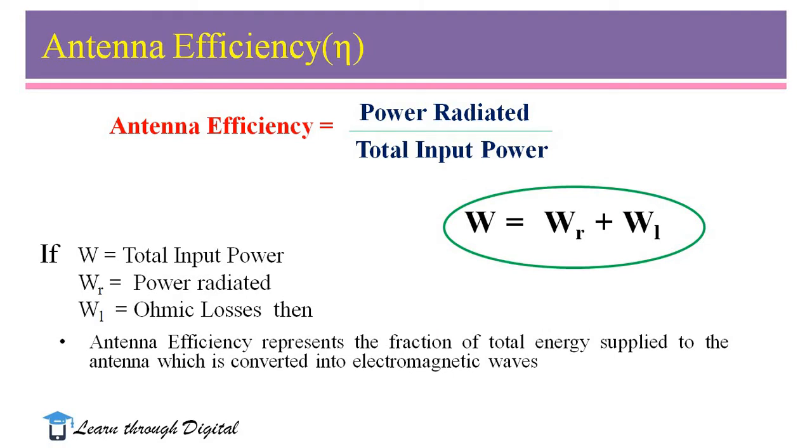Next, we see about the term antenna efficiency. Antenna efficiency is nothing but the ratio of power radiated to the total input power. It can be written in terms of the radiation resistance.